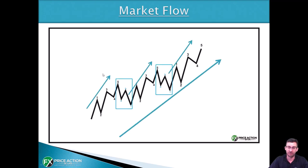The main impulse wave can be broken down into an impulse, correction, impulse, correction, impulse. The smaller corrections can also be broken down further. That's the key concept to understand. Now let's quickly look at a chart to see an example of these impulsive and corrective moves.